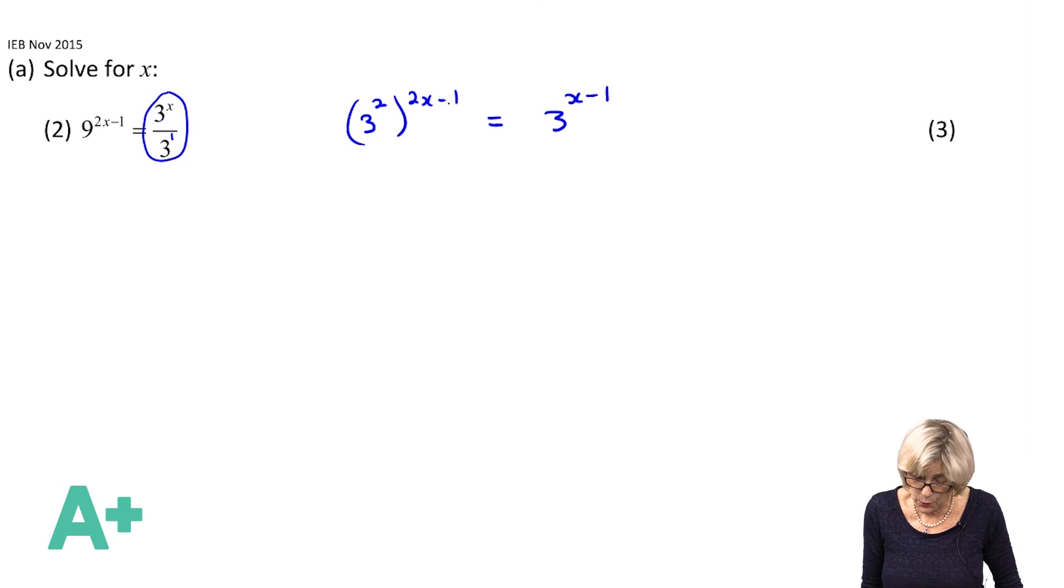Now I'm going to use a law. I'm going to times the 2 to the 2x - 2. So I get 3^(4x-2). And then to equate these two, I need to get the exponents to be the same. So 4x - 2 must be equal to x - 1. So we get 3x is equal to 1. Therefore x is equal to a third.